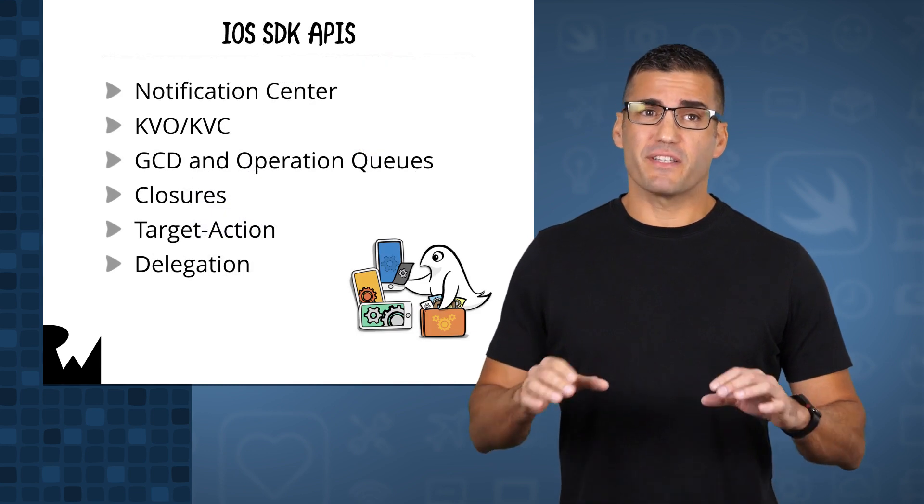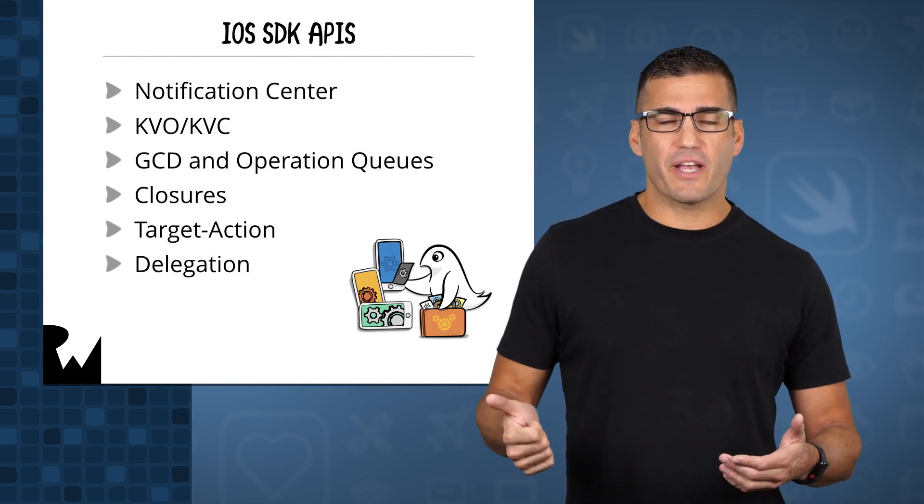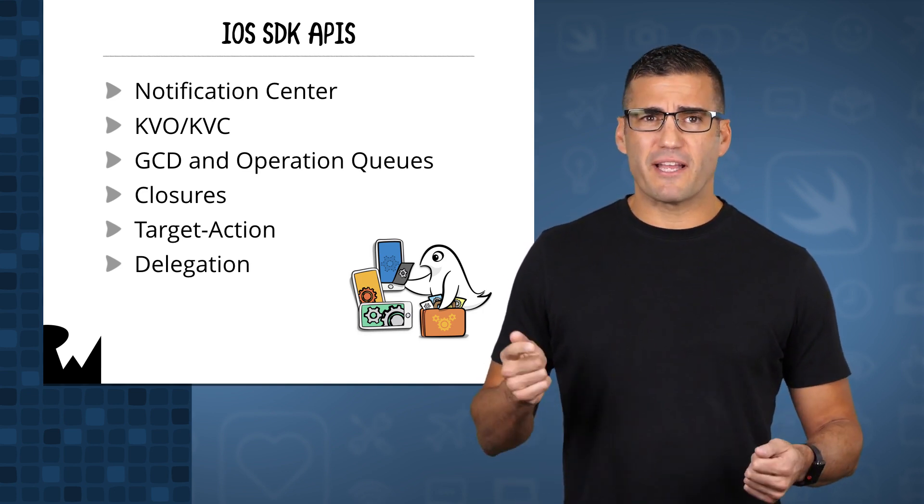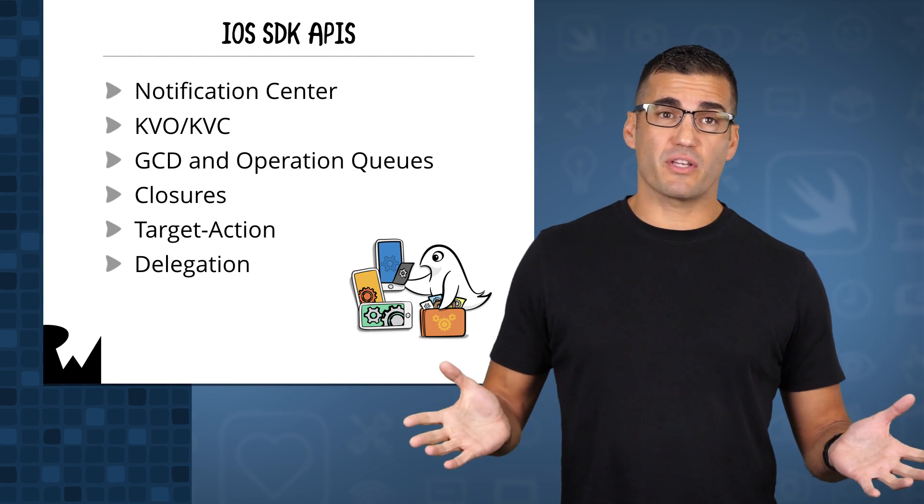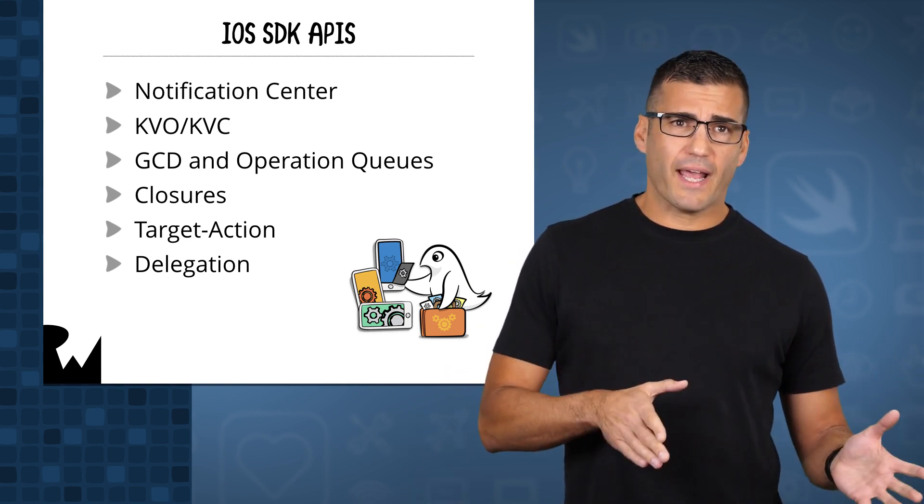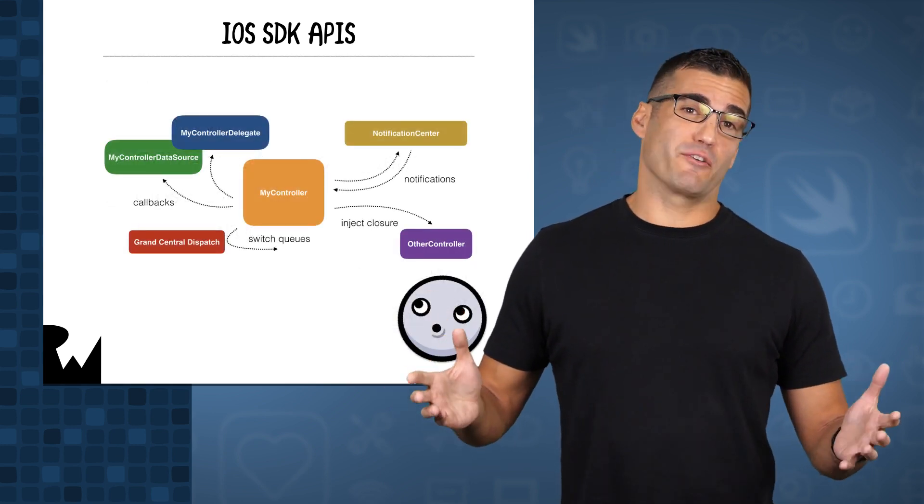The iOS SDK provides various dissimilar APIs to do this work, including Notification Center, Key Value Coding and Observing, Grand Central Dispatch, and Operation Queues, and using closures and design patterns like Target Action and Delegation too. It's a bit of a soup of various APIs and patterns really.